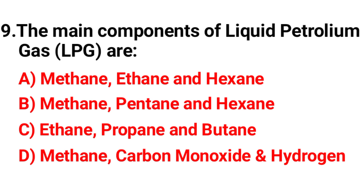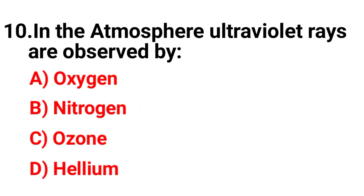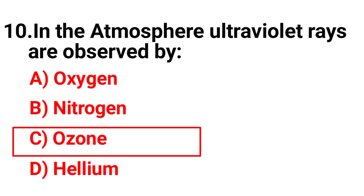Question nine: The main components of liquid petroleum gas (LPG) are — the correct answer is option C, ethane, propane and butane. Question ten: In the atmosphere, ultraviolet rays are absorbed by — the correct answer is option C, ozone.